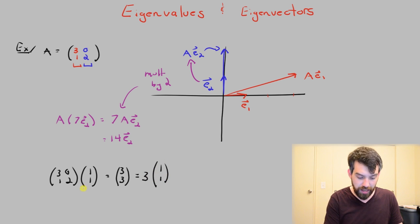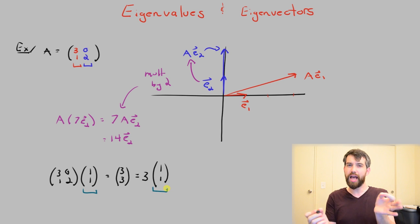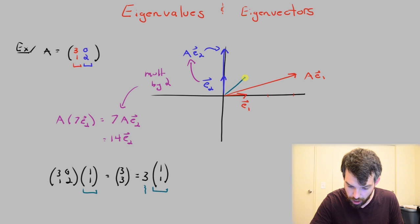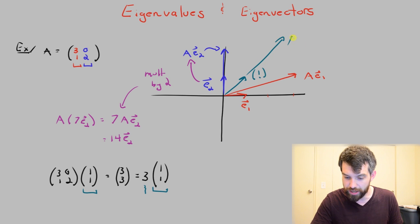In other words, what's happening here is that this vector (1,1) is going to itself, but with a stretching factor of 3. And if I want to try to plot that, so here is the vector (1,1), and then it goes under this particular transformation to A(1,1), which just looks like 3 times (1,1).